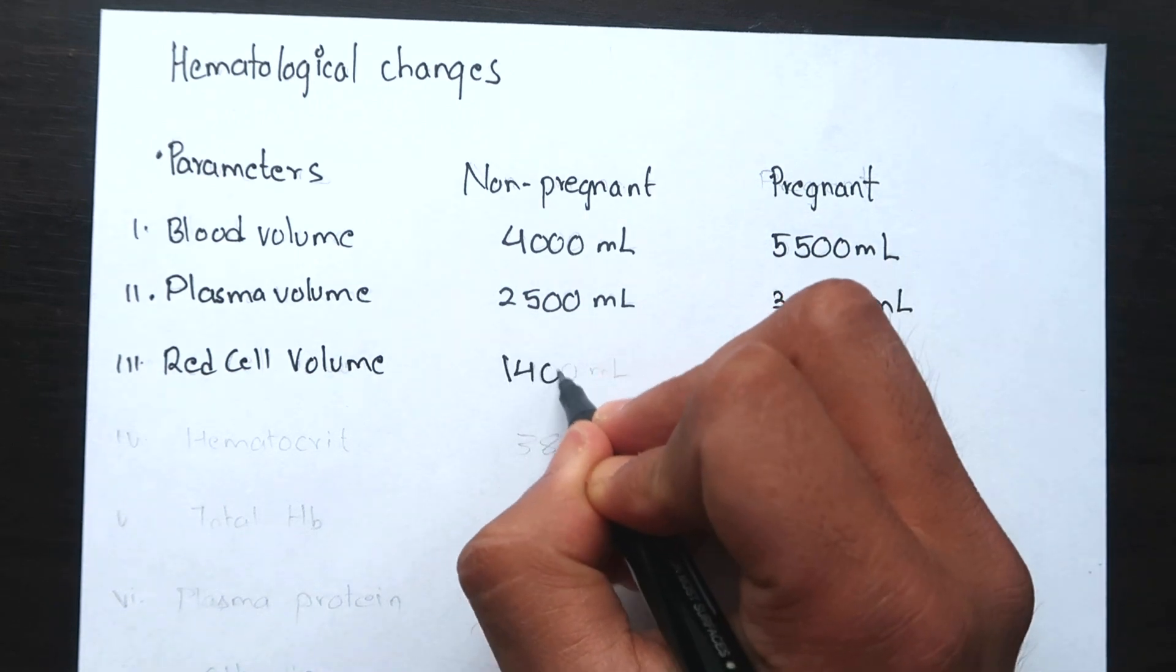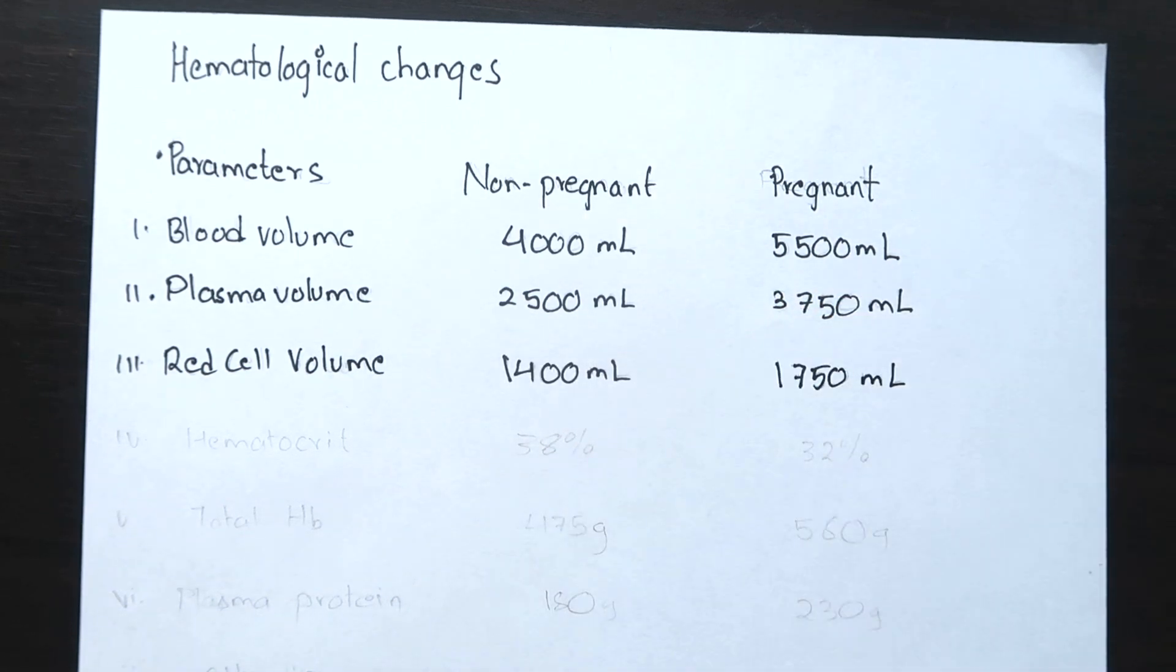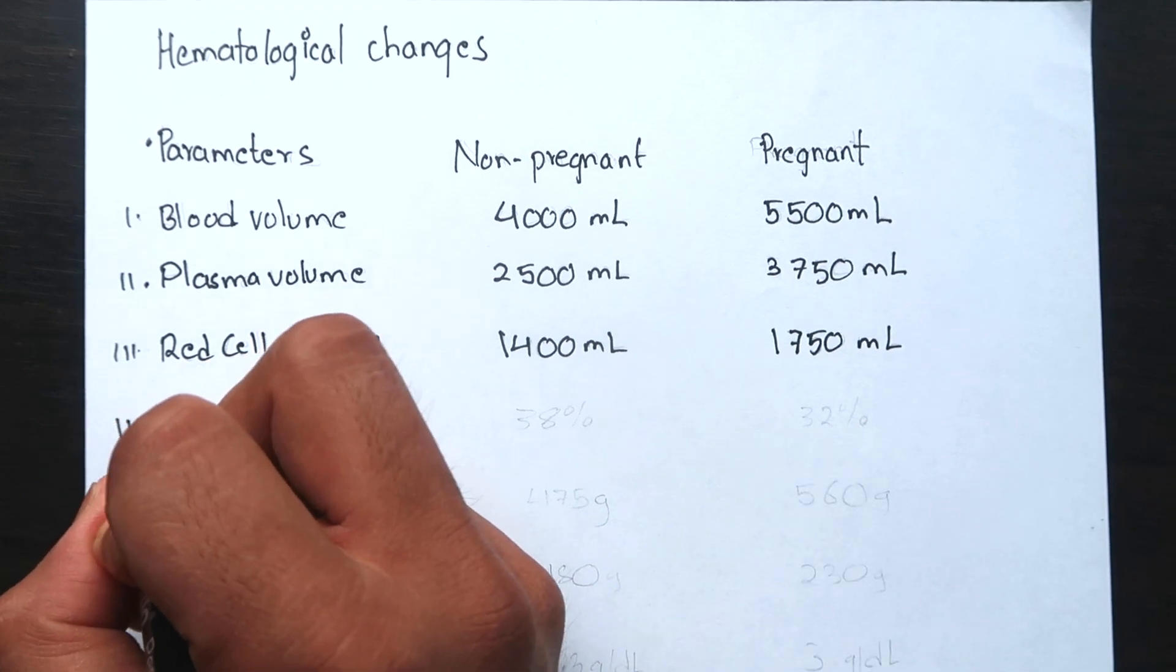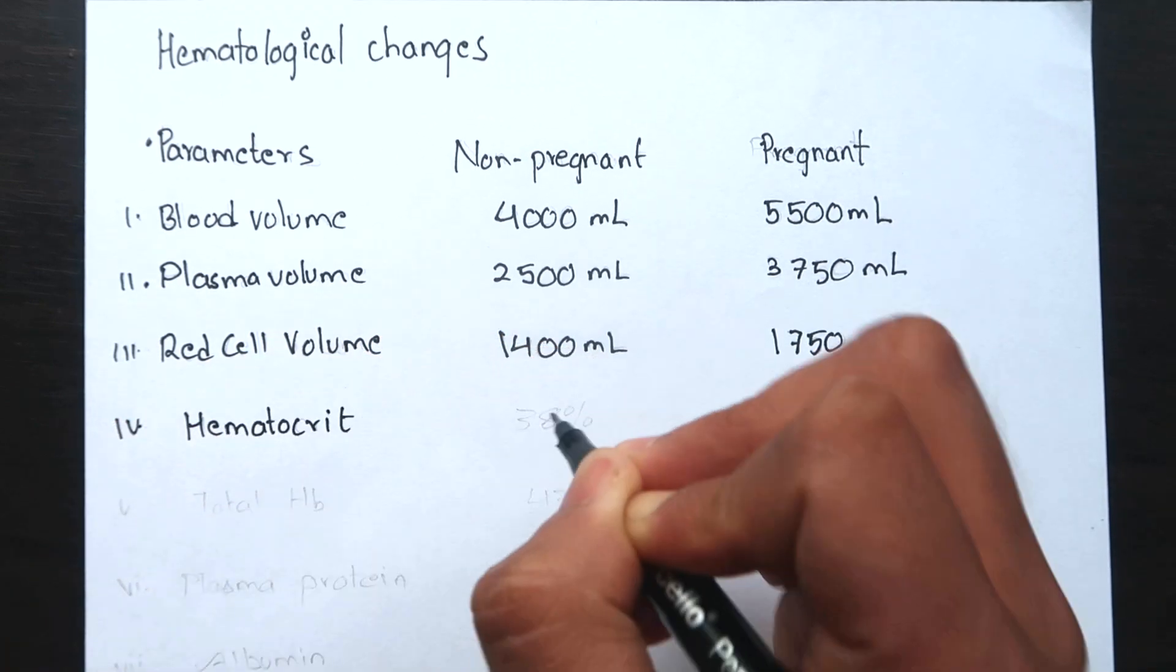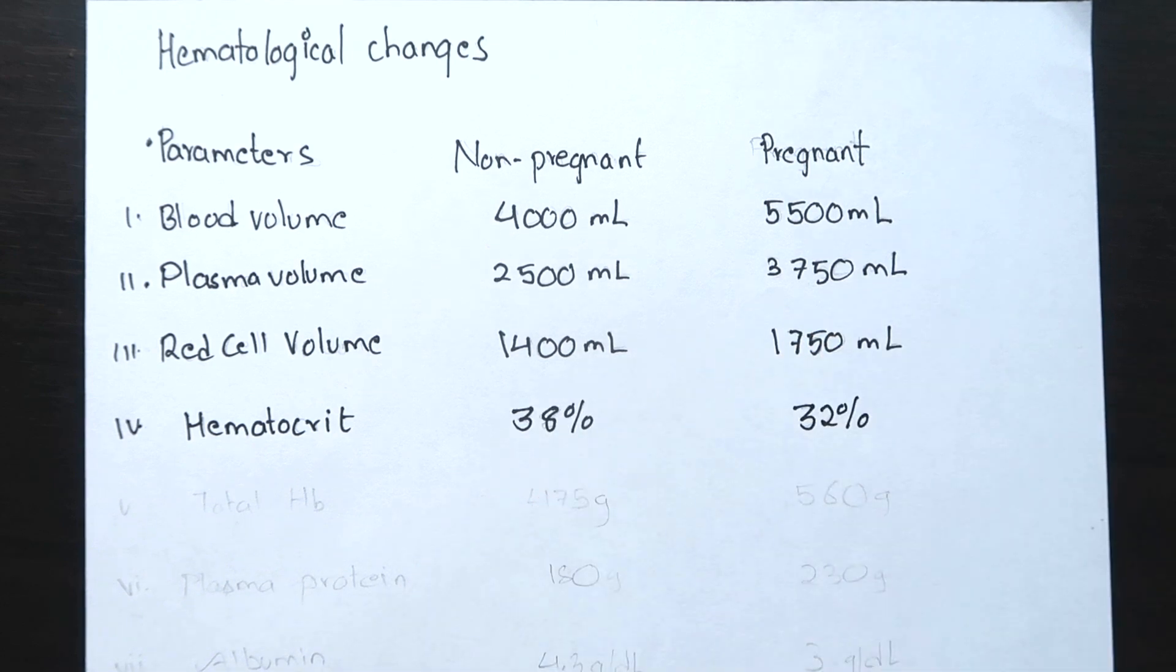And although the red cell volume is increased, the hematocrit value decreases due to higher increase in plasma volume as compared to red cell volume. And the advantage of this is it decreases the blood viscosity thus ensures optimum gaseous exchange between the maternal and fetal circulation.